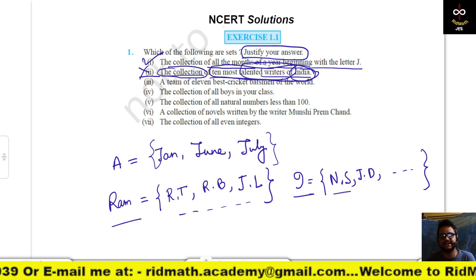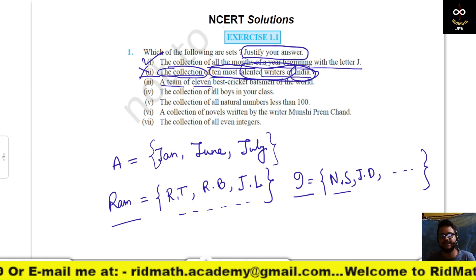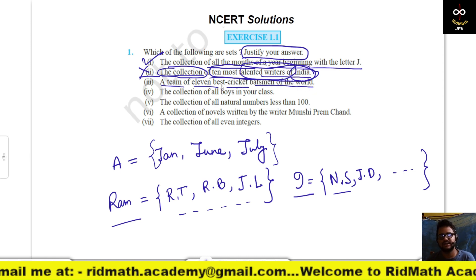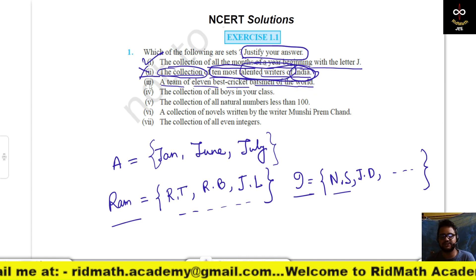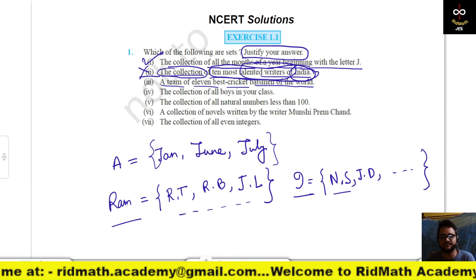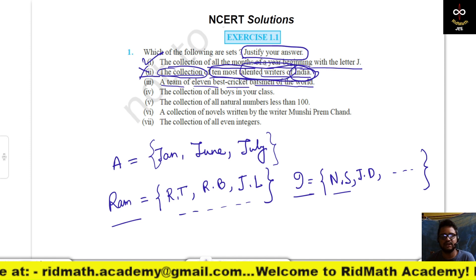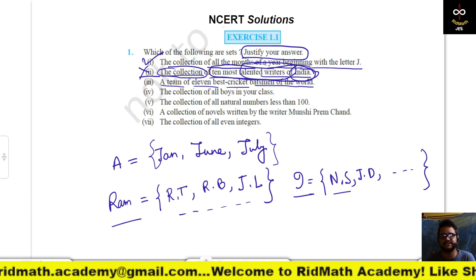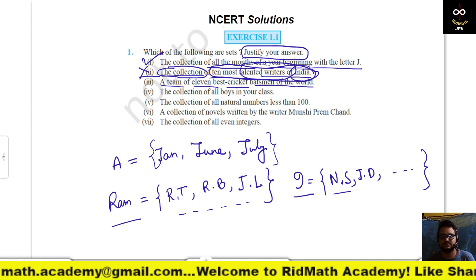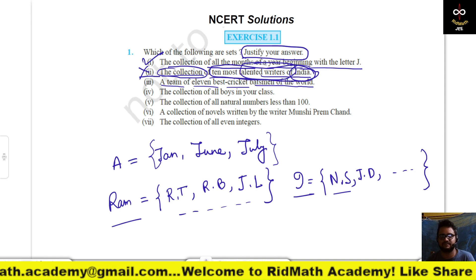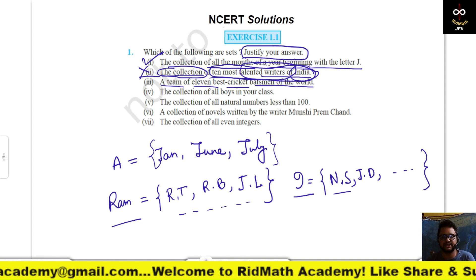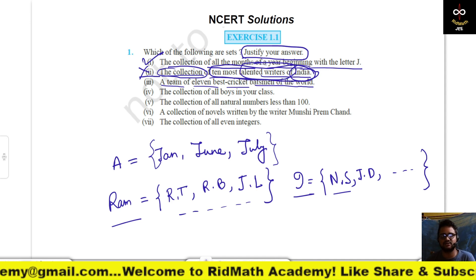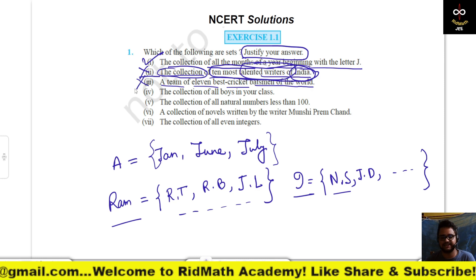Third: a team of eleven best cricket batsmen of the world. Same for this collection — the choice varies from person to person, and that is why this is also not making a set.